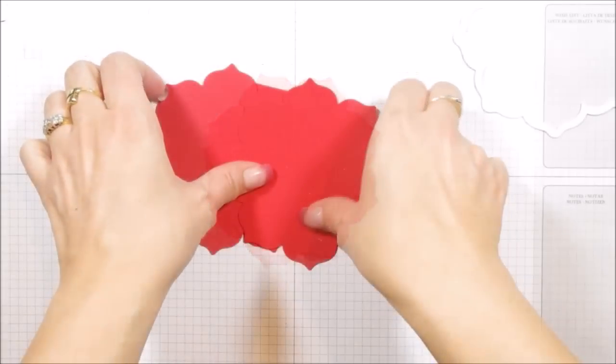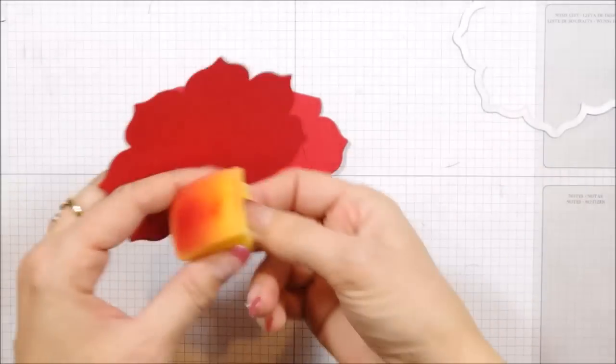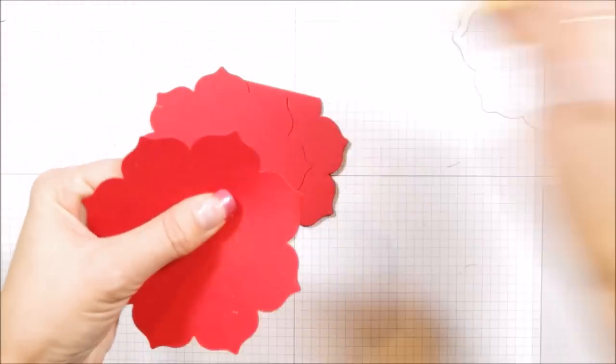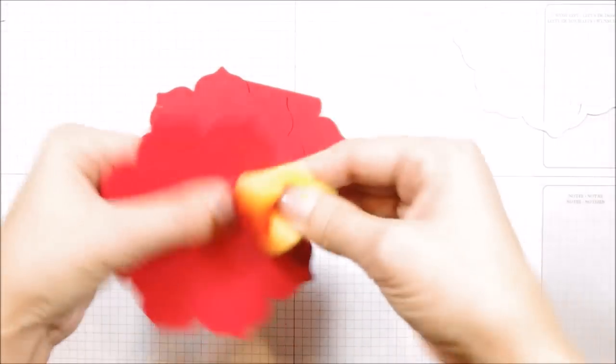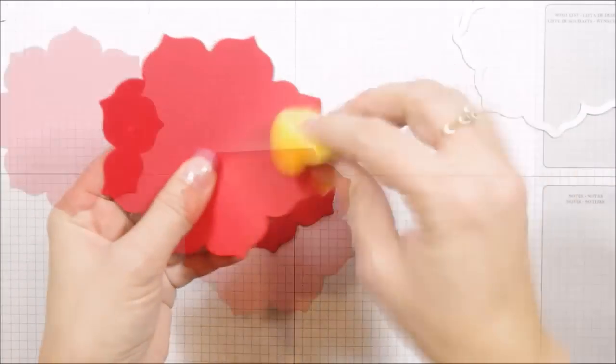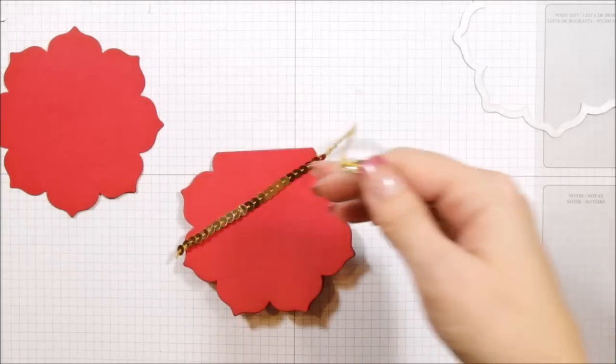Before we put it together, we're actually going to do a little bit of sponging. So I took a wedge of our Stampin' Sponge and we're just going to add some color on the edges just to give it a little bit of texture. Okay, so now that we've done the texturing, we're going to put this together.